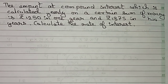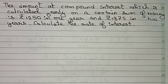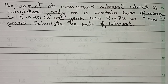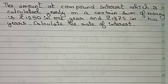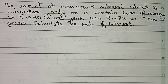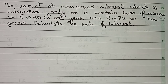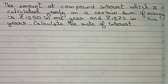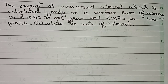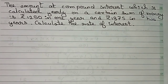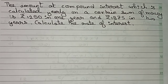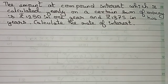Hello guys, welcome to this video. The question is: the amount at compound interest, calculated yearly on a certain sum of money, is rupees 1250 in one year and rupees 1375 in two years. Calculate the rate of interest. To solve this, you have to make two equations.